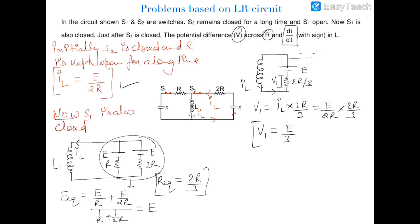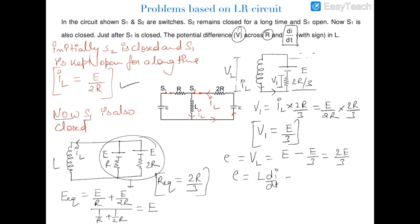Substituting, v1 = (E/2R) × (2R/3) = E/3. The remaining voltage appears on the inductor: v_L = E − E/3 = 2E/3. Since v_L = L·di/dt, we get di/dt = 2E/(3L).